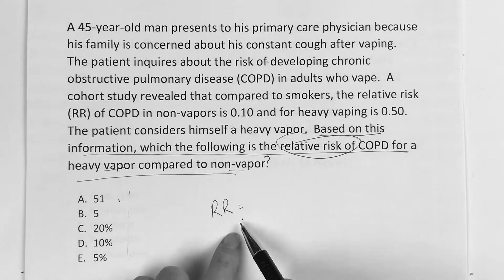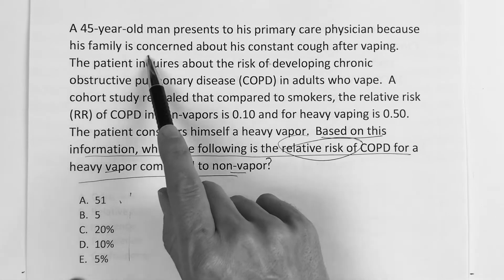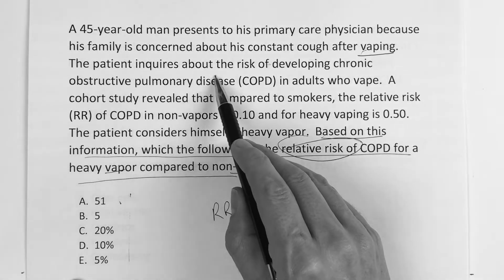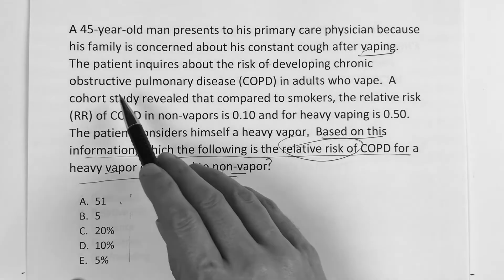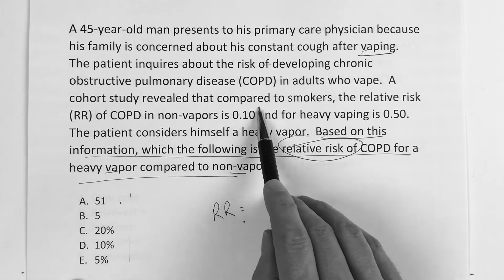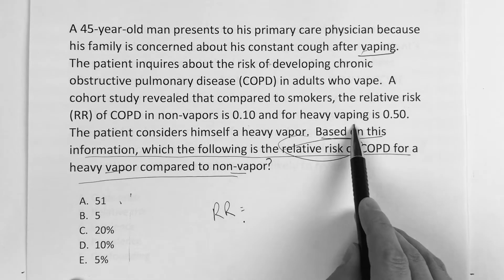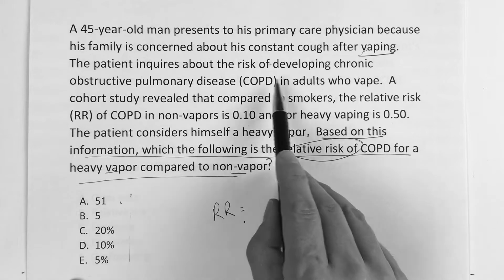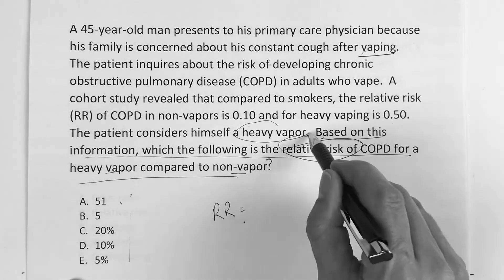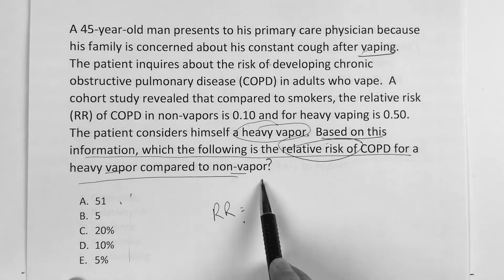So let's go ahead and read the question. It says: a 45-year-old man presents to his primary care physician because his family is concerned about his constant cough after vaping — essentially smoking. The patient inquires about the risk of developing chronic COPD, chronic obstructive pulmonary disease, in adults who vape. A cohort study revealed that compared to smokers, the relative risk of COPD in non-vapors is 0.1 and in heavy vapers is 0.5. The patient considers himself to be a heavy vapor. Based on this information, which of the following is the relative risk of COPD for a heavy vapor compared to a non-vapor?